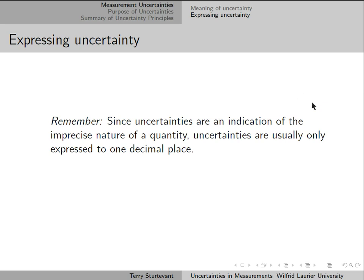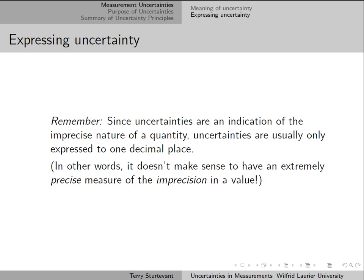When you express uncertainties, since uncertainties are an indication of how imprecise a quantity is, they're usually only expressed to one decimal place, because it doesn't make sense to have very precise measurement of the uncertainty, of the imprecision in a value.